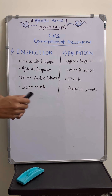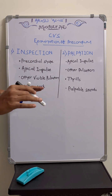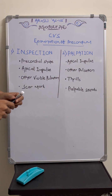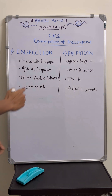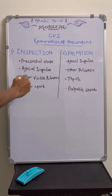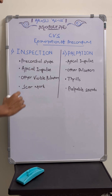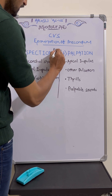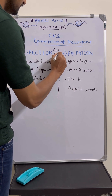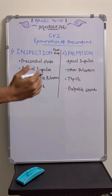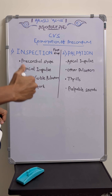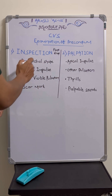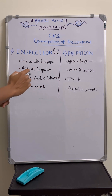The CVS case will be given as a short case, so no need to take history. Coming to the examination proper — first, inspection. There are four headings: precordial shape, apical impulse, other visible pulsations over the precordium, and scar mark. Inspection has to be done from the foot end — this is one important point. Stand at the foot end of the patient while the patient is lying supine.